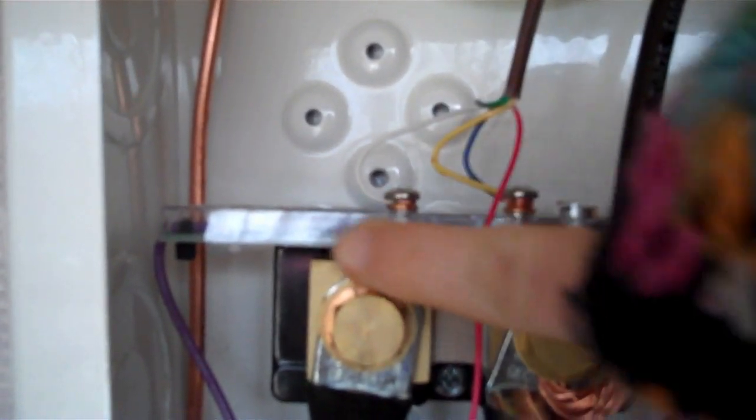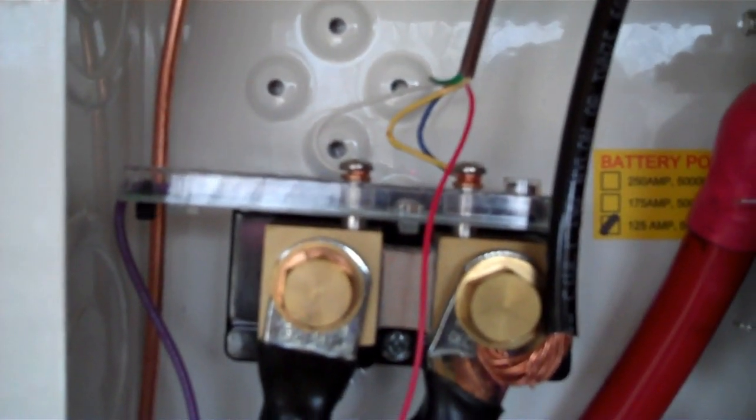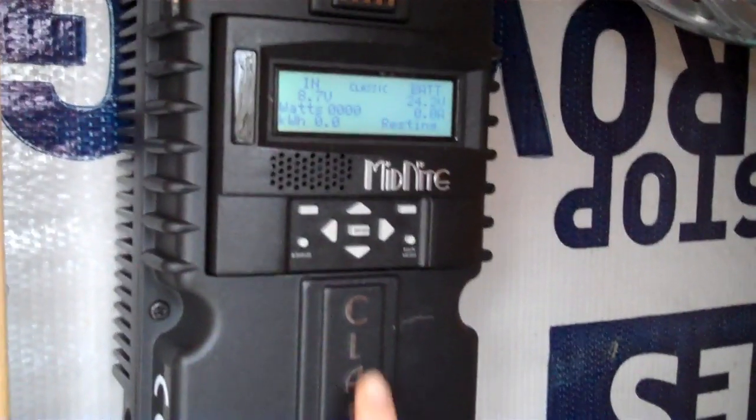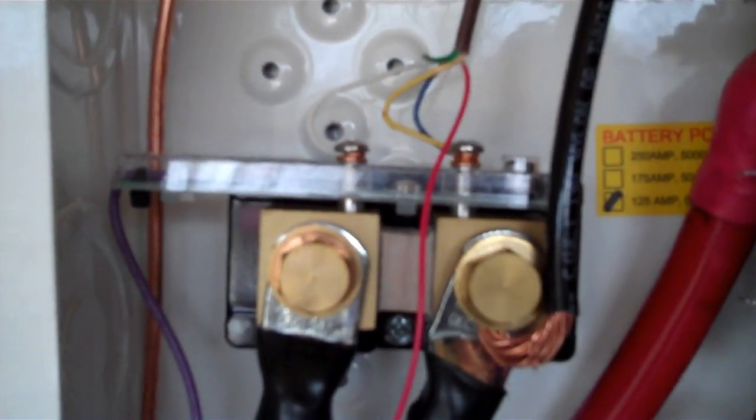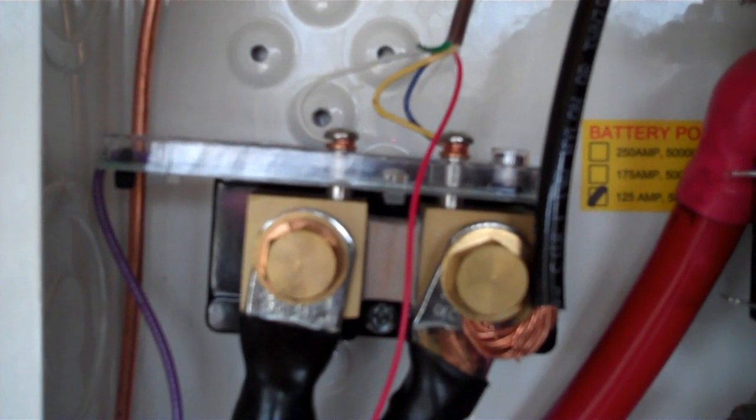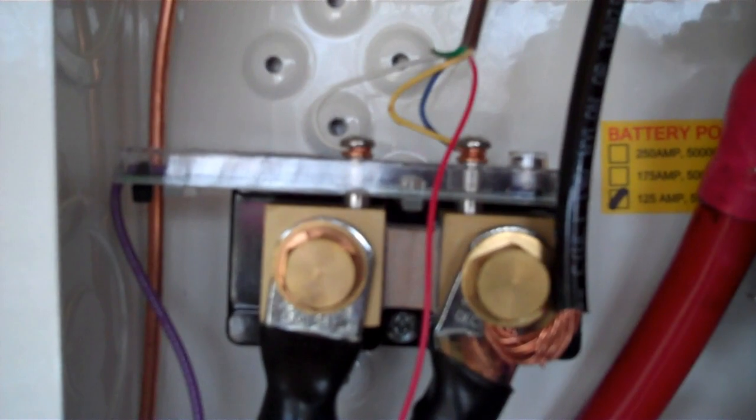But what we also have, this plastic piece across here, is called the Whizbang Jr. Now that actually just came along with our Classic 150 charge controller here. And it functions much like a battery monitor, just like our Trimetric does. And they said that you could use it or not use it. But we decided to throw it on there. So if we wanted to be able to program into the Classic the ability to monitor the battery, we could do that.